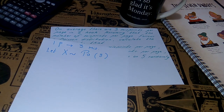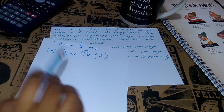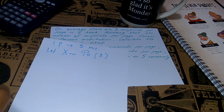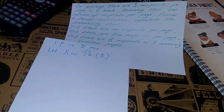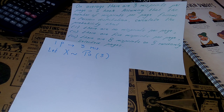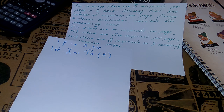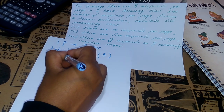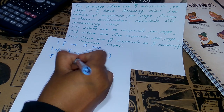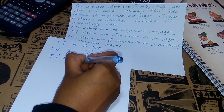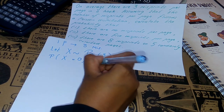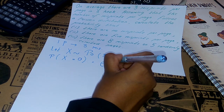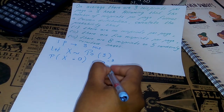Now remember when you calculate probabilities in a Poisson distribution, you have to pay attention to the interval. This distribution is for one page in a book. Now you're asked to find the probability of no misprints per page — so there are no misprints in one page. We need to find the probability that X is equal to 0.